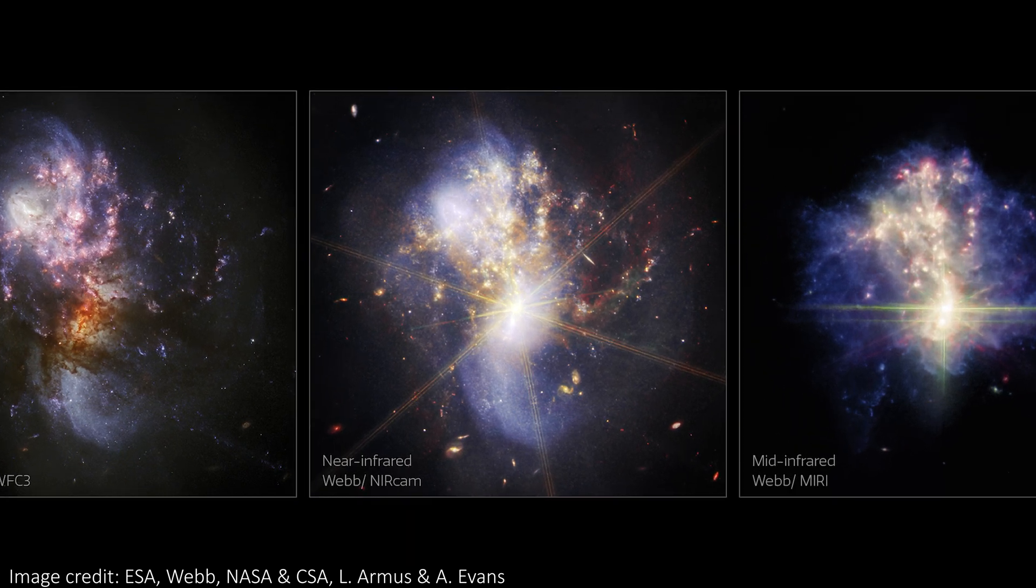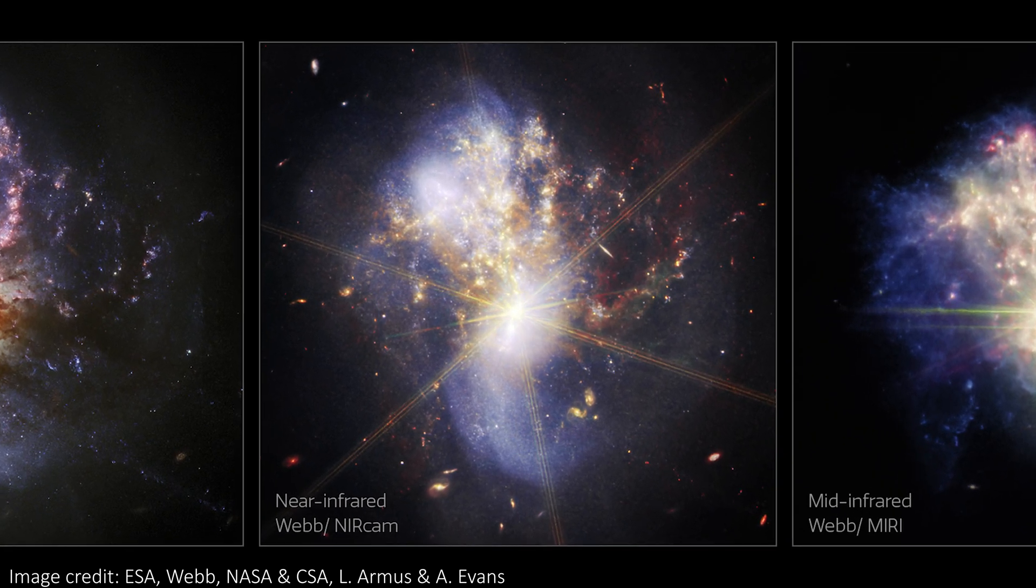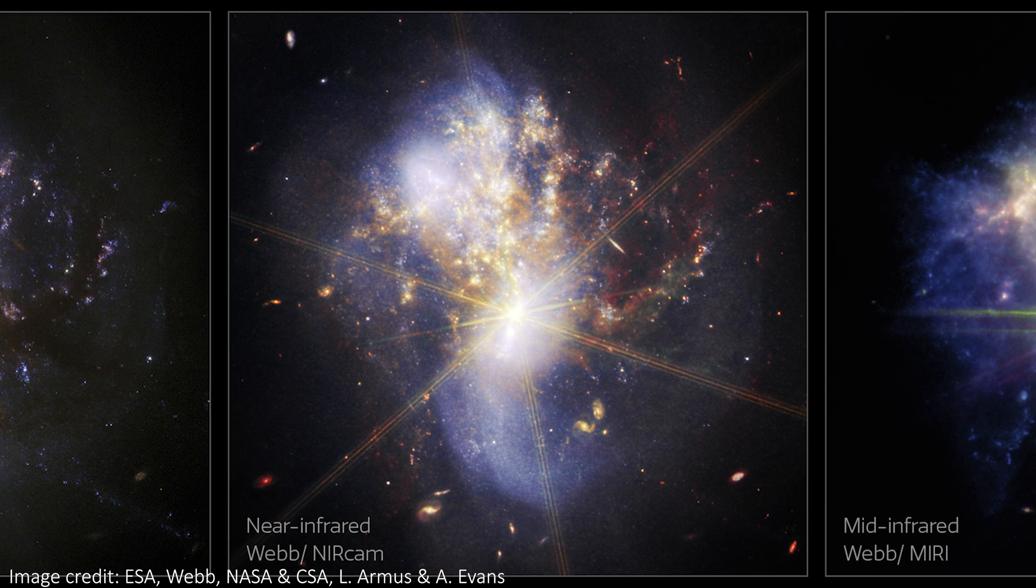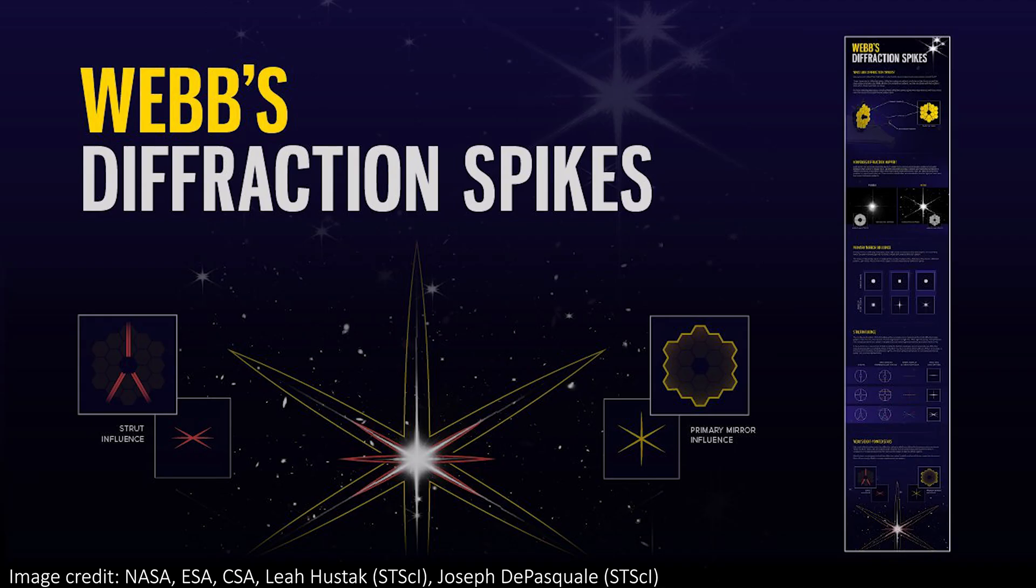The bright diffraction spikes we see coming from the center of the JWST image suggest a very bright center to the merger, likely from an active supermassive black hole eating a lot of matter or extremely high energy collisions here.